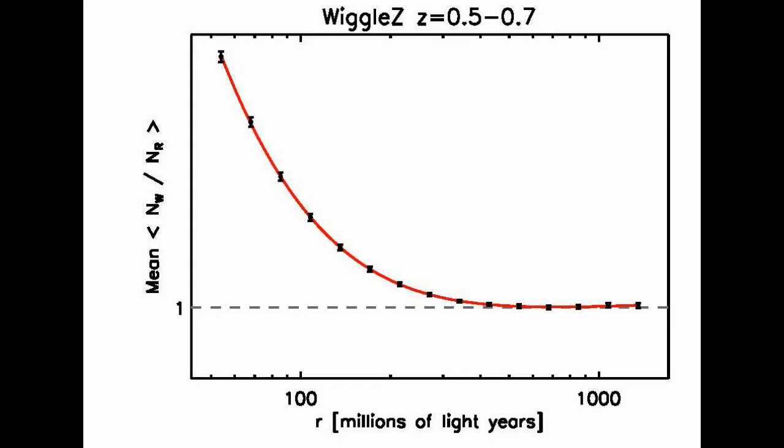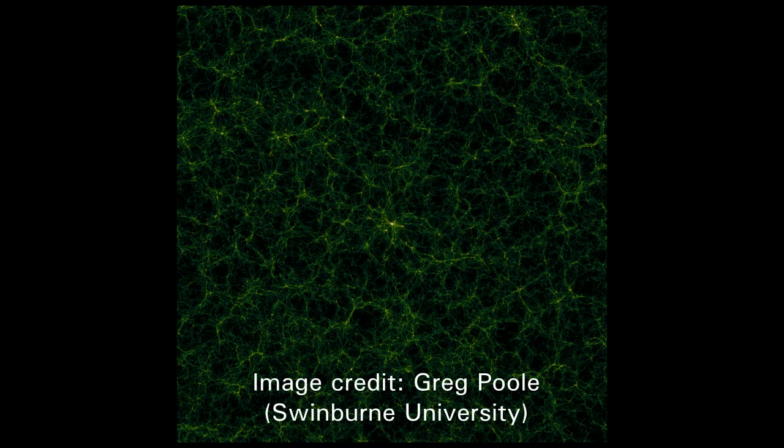What we saw is that on small scales, we have more WiggleZ galaxies than random galaxies in a sphere, since the WiggleZ galaxies are more clustered than random. But as we go to large spheres, this ratio tends to 1, which means we count the same number of WiggleZ galaxies as random galaxies. We found that on scales larger than 300 million light-years, there is no more sign of clustering, showing that the universe is homogeneous, as astronomers suspected. So our big picture of the universe appears to be correct.